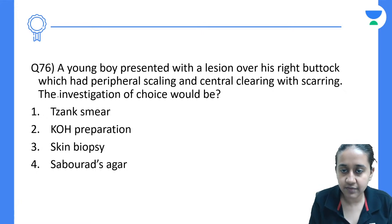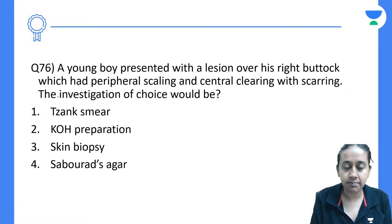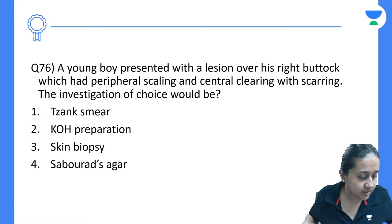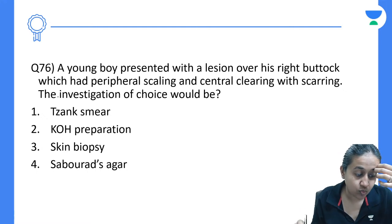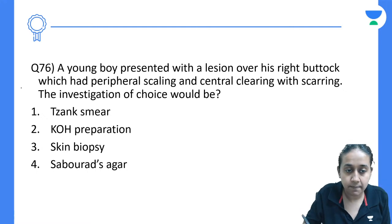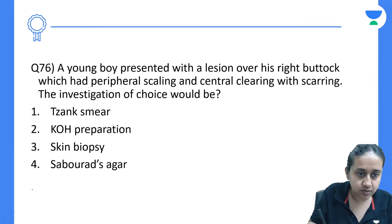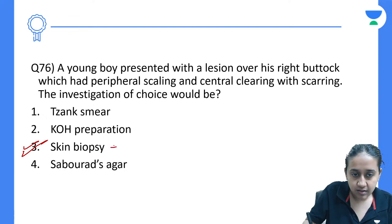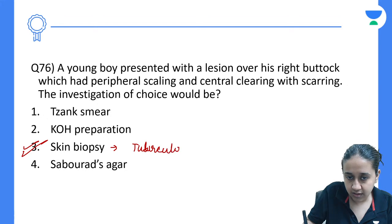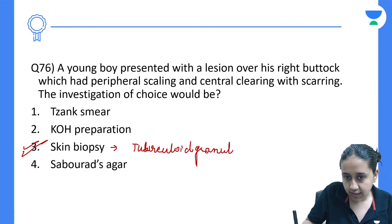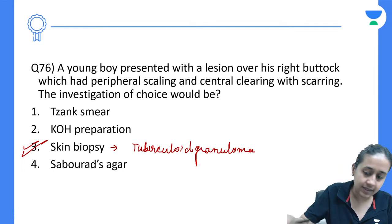A young boy presented with lesions over his right buttock with peripheral scaling and central clearing with scarring. The investigation of choice is skin biopsy, which will show a very characteristic tuberculoid granuloma. This is actually a description of lupus vulgaris.